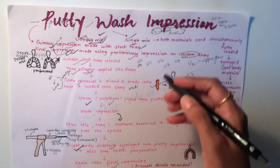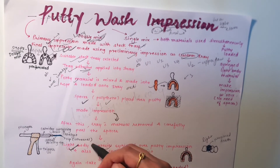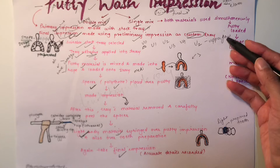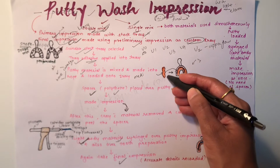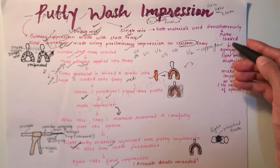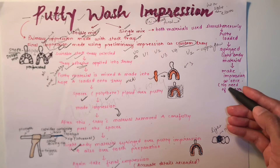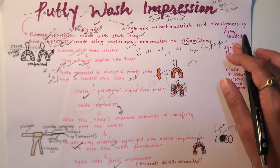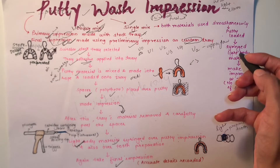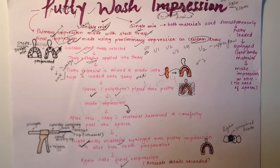In the single mix technique, both the heavy body and light body materials are used simultaneously. You load the putty material onto the tray as before, but instead of taking a primary impression first, you directly syringe the light body material over the putty material and take the impression all at once — only one impression, not two. There is no need for a spacer because the light body is applied directly over the putty material in one go.